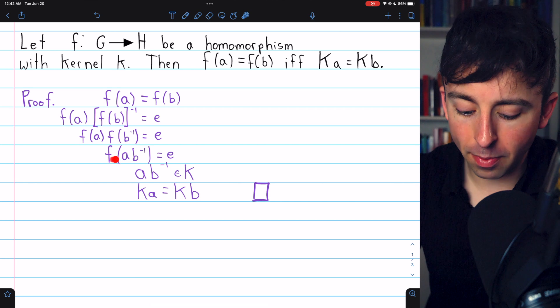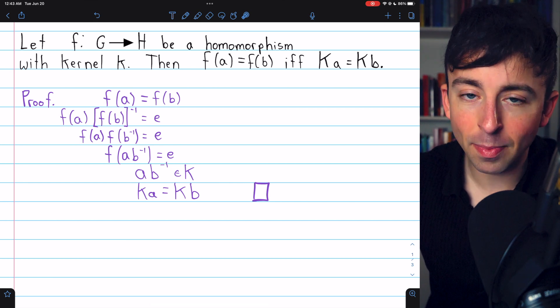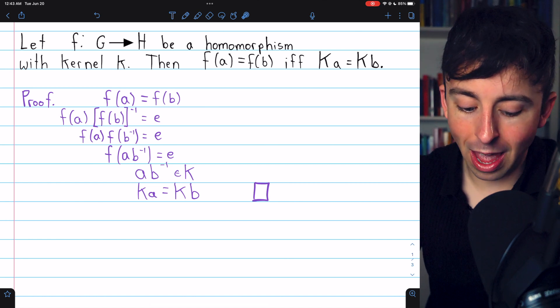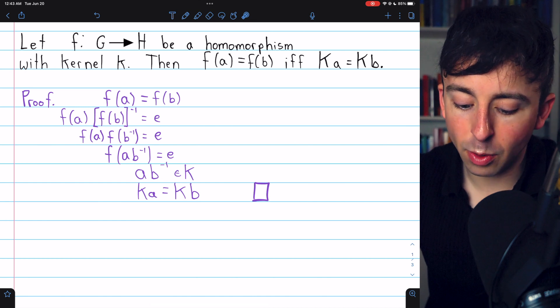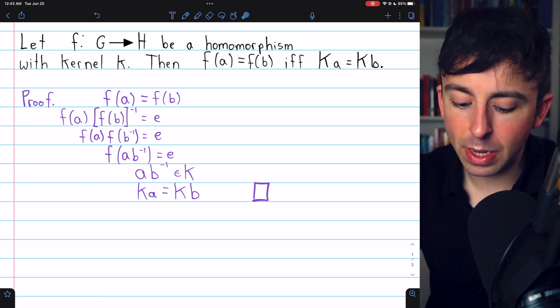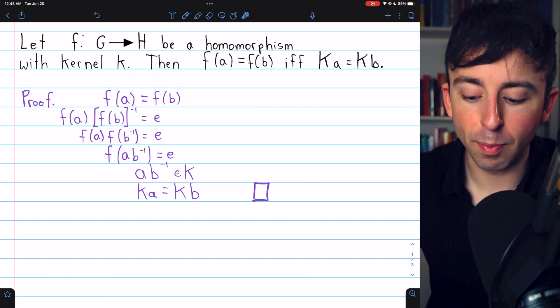Then since F is a homomorphism, that would mean that F(a) times F(b inverse) equals the identity. But homomorphisms map inverses to inverses. So that would mean that F(a) times F(b) inverse equals the identity. And then multiplying both sides on the right by F(b) would get us to the desired result that F(a) equals F(b).